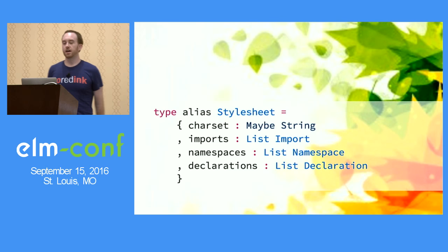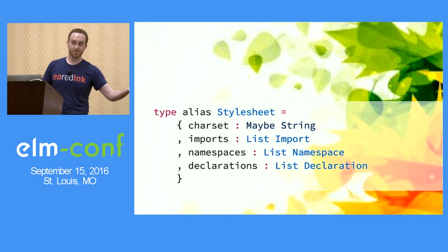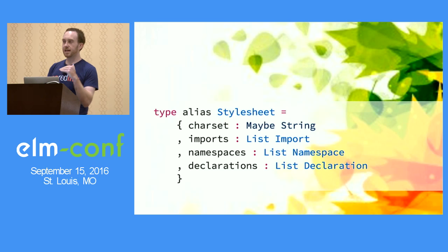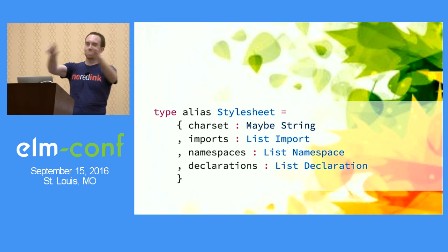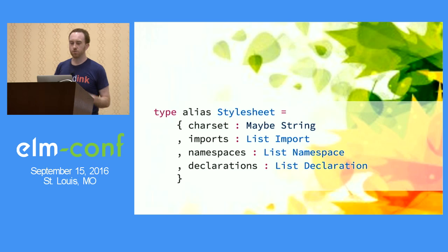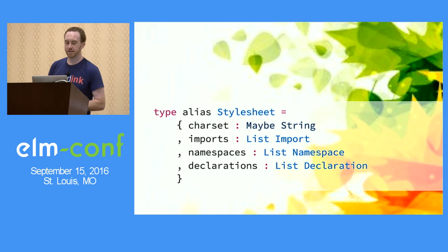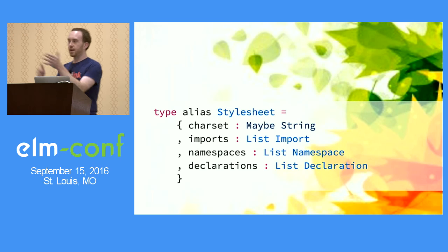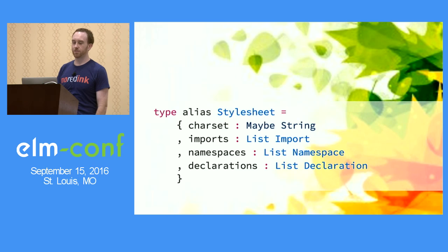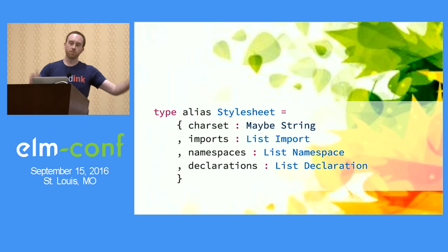So we talked about it and where we ended up was this: charset — what if that were just a separate thing, a Maybe String? You can have zero or one charsets — that's one of the rules — so Maybe is pretty good for that. Imports, namespaces, and declarations cannot be intermingled; they have to be one contiguous chunk each. So why would they be the same type? Having them be the same type is actually an anti-feature. You'd much rather have them be incompatible types so you can't represent having them intermingled — it wouldn't type-check. Having them be different things means generating a valid style sheet is a piece of cake: if charset is Nothing, do nothing; if it's Just, that's the first character. Then list imports, list namespaces, list declarations. Done — that's going to be valid every time.